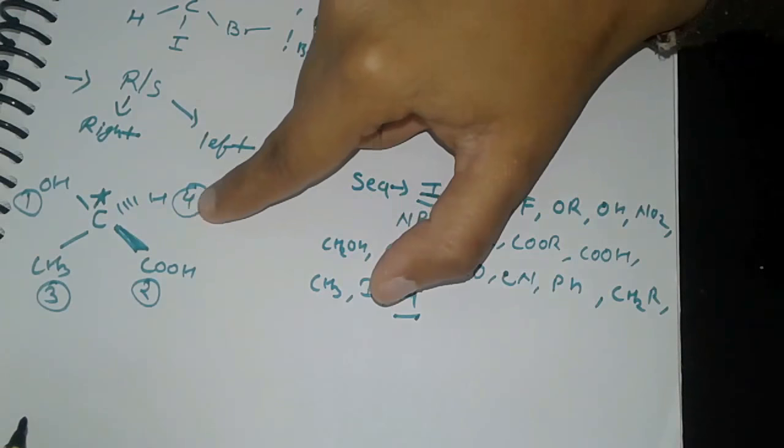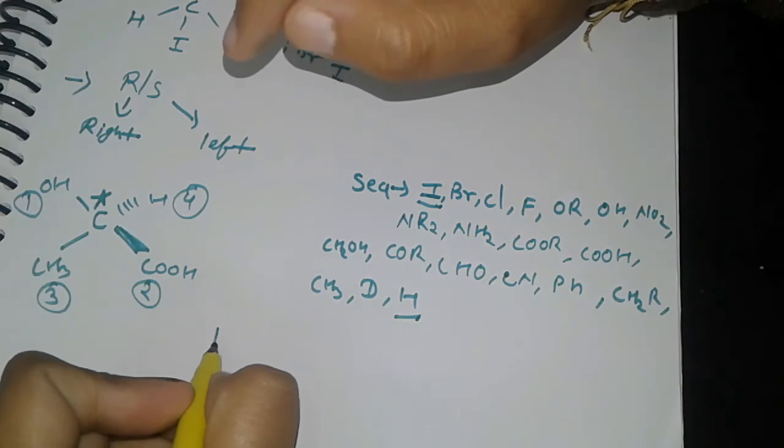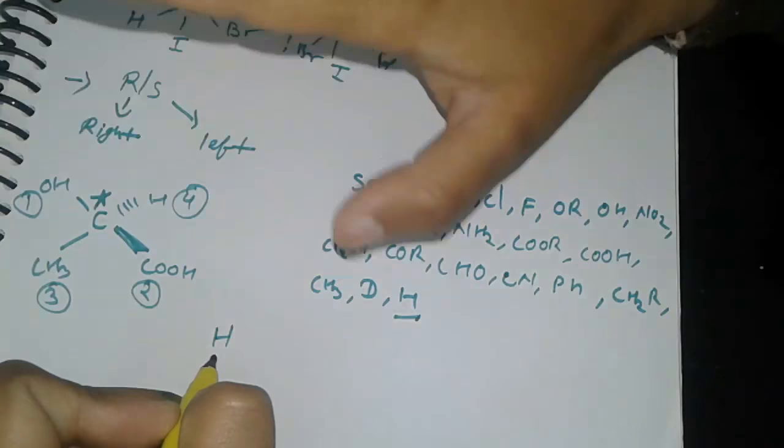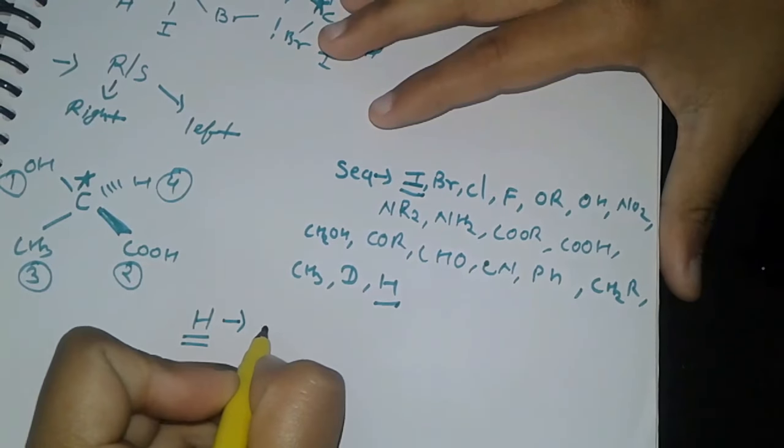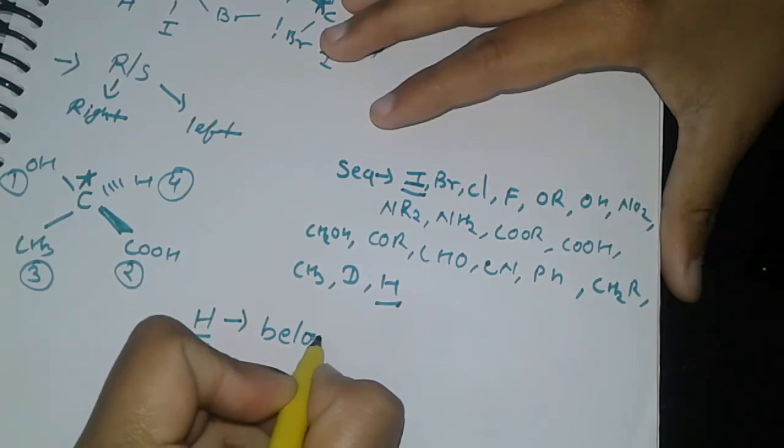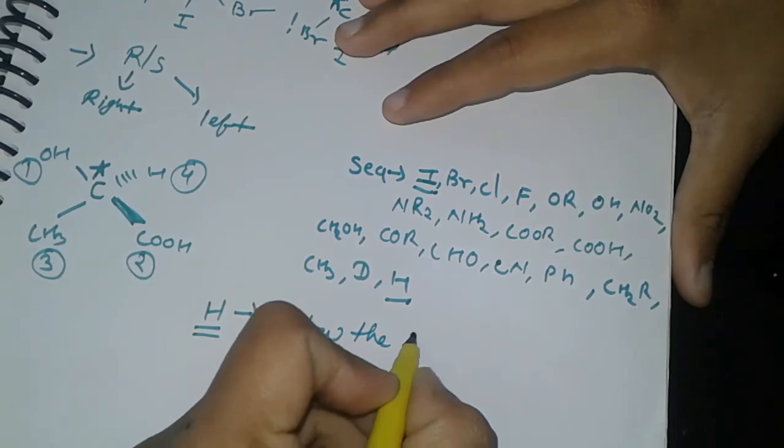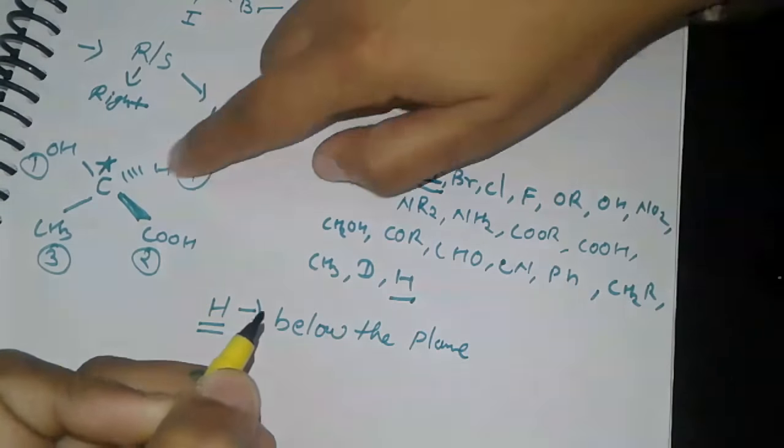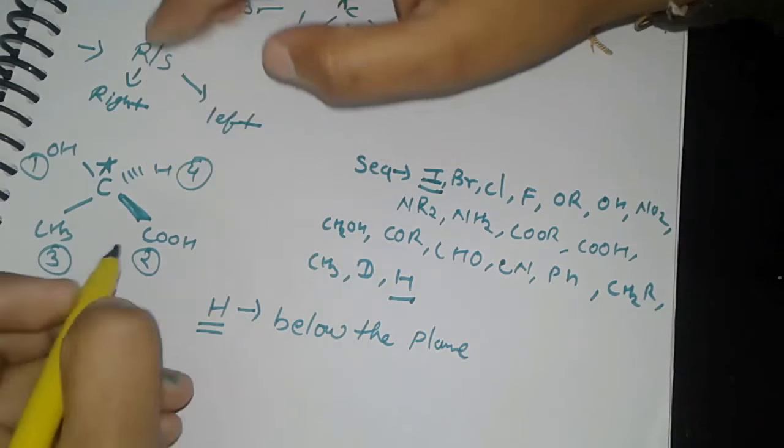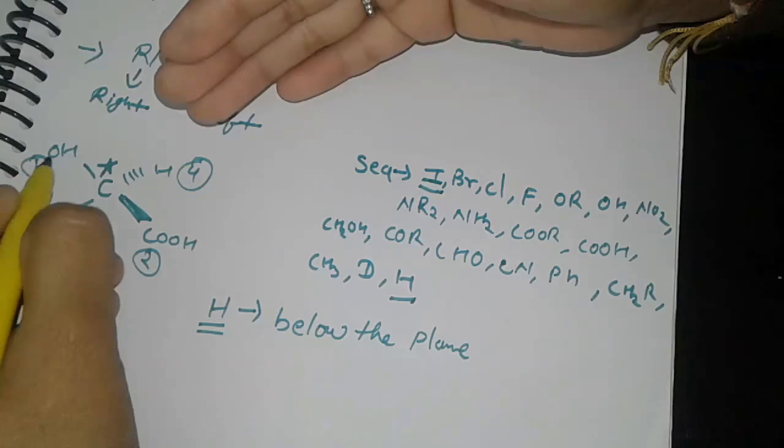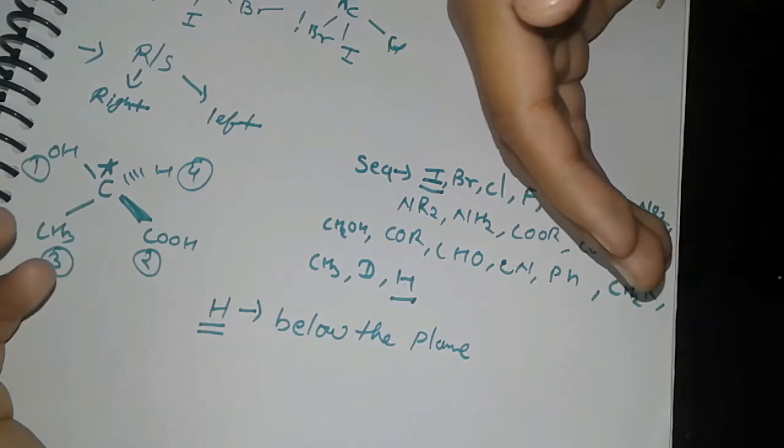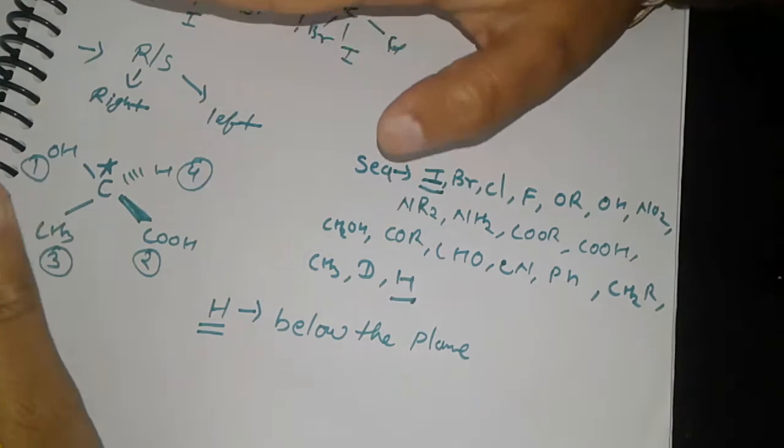Now, flying wedge representation rule is: if your lowest priority atom, in this molecule hydrogen, is below the plane (represented by dash line), then you go from high priority to low priority. If rotation is clockwise, it's R; if anticlockwise, it's S.